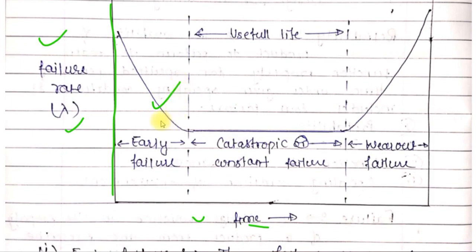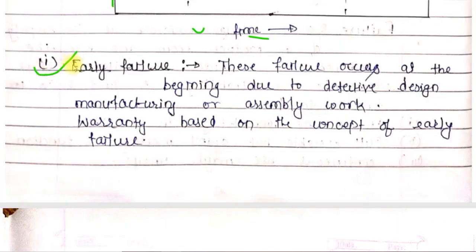Failures are mainly three types: early failure, catastrophic or constant failure, and wear-out or aging failure. This data is useful data. Let me explain one by one what each failure is.